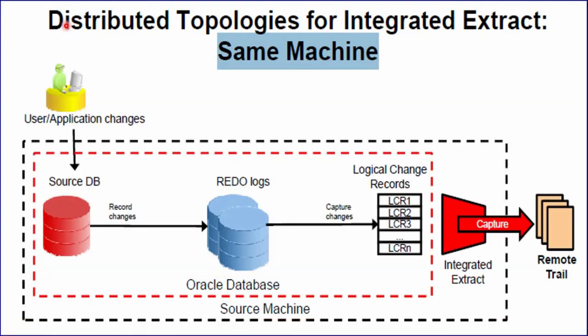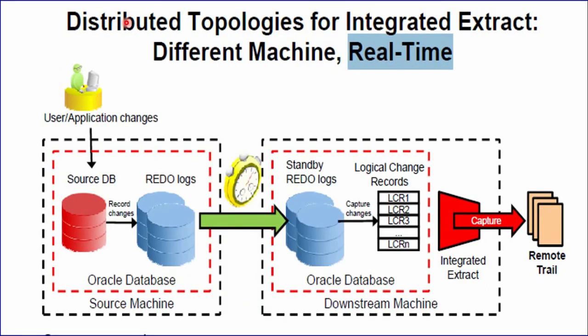Now let's discuss Downstream Capture. GoldenGate downstream deployment allows you to offload the source database extract load to an intermediate or target server. The source database ships its redo log to the downstream database, and extract uses the log miner server at the downstream database to mine the redo log. A downstream mining database can accept both archive log and online redo log from the source database. As we can see, the source database ships the redo log over the network to the downstream machine. In the downstream machine, there is the standby redo log. We use Data Guard technology to ship the redo log to the standby redo log. Then the standby redo log is converted into LCR format, and integrated extract reads the LCR format and writes to the remote trail file.